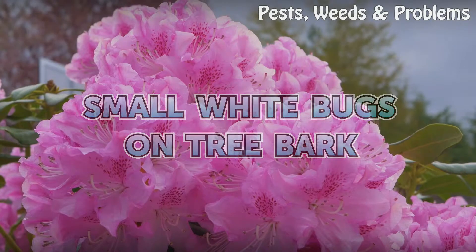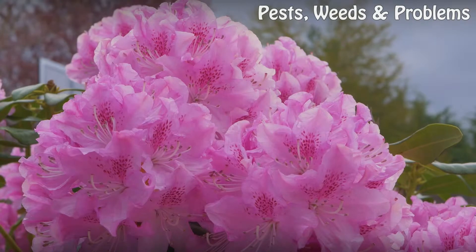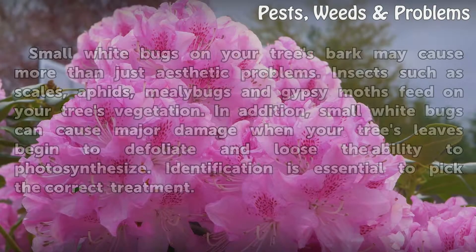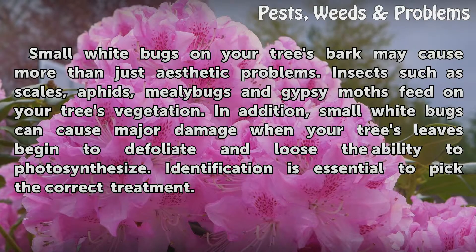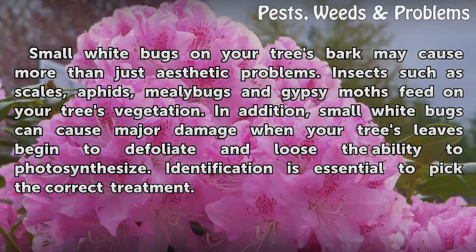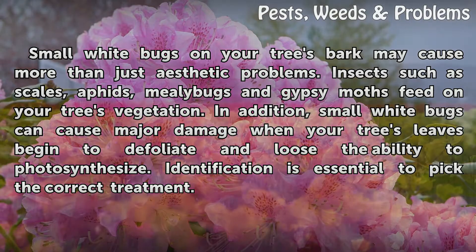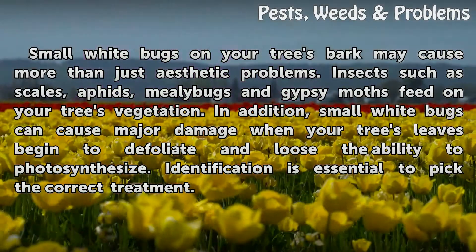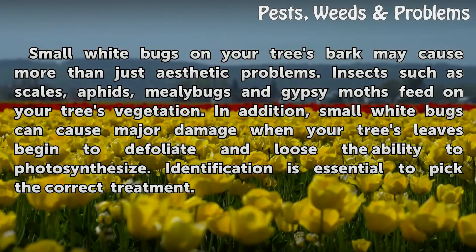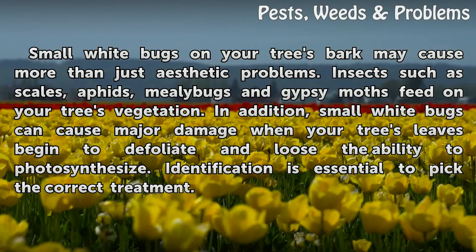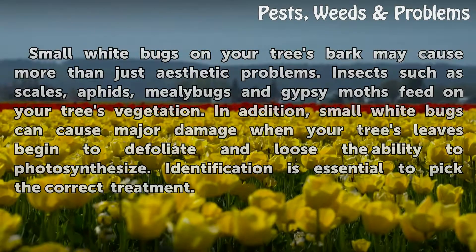Small white bugs on your tree's bark may cause more than just aesthetic problems. Insects such as scales, aphids, mealybugs, and gypsy moths feed on your tree's vegetation. Small white bugs can cause major damage when your tree's leaves begin to defoliate and lose the ability to photosynthesize. Identification is essential to pick the correct treatment.